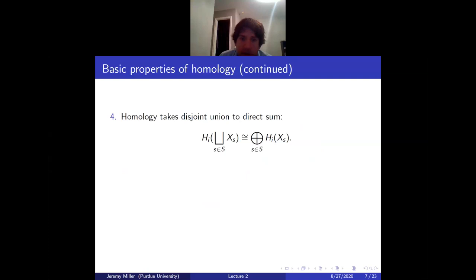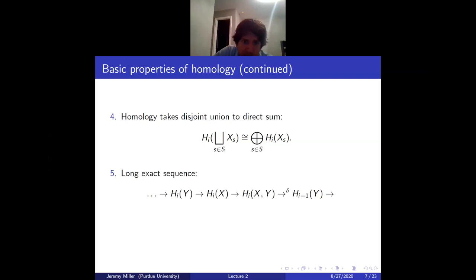The next basic property is that the homology of a disjoint union is the direct sum of the homologies of the individual spaces. And then the last property is that you have a long exact sequence.